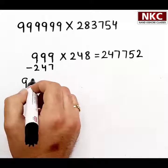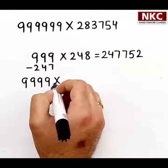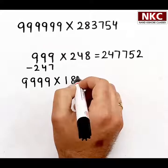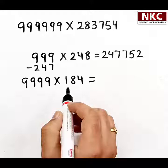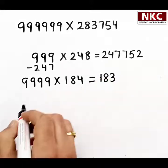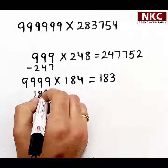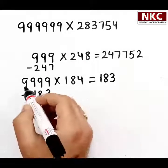I'm doing one more question. Let's suppose 9999 multiplied with 184. Just one number less than 184, which is 183, and then subtract this 183 from this value. What will we get?